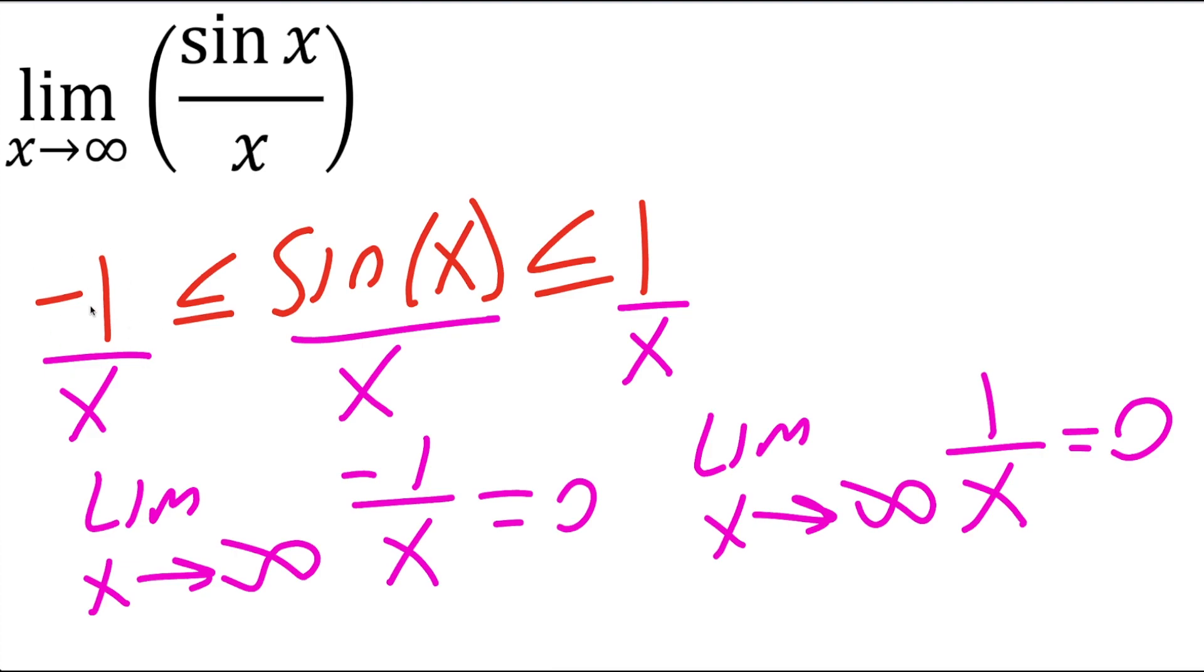Now this is saying that if this piece is 0, and this piece is 0, then that means this piece must also be 0. Because this value is saying it's less than or equal to 1, but greater than or equal to negative 1. And when we did the limit as x approaches infinity for this piece, we got 0. And when we did this piece, we also got 0.